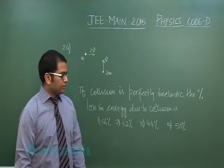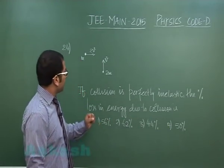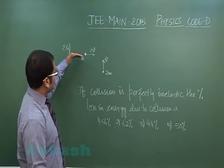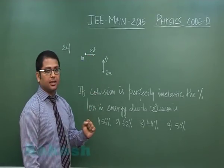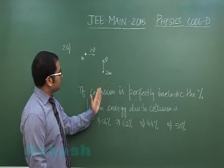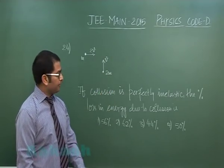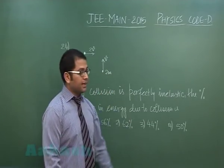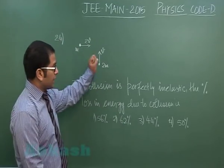Okay, let's go to question number 24. It's from collision. A mass m is moving with speed 2v along x, another mass 2m moving with speed v along y. The collision is perfectly inelastic, meaning they stick together after collision.